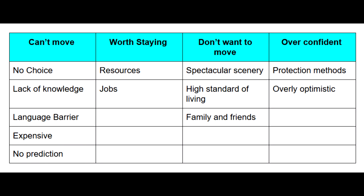Lastly, people can get overconfident with defense mechanisms. There are defense processes and prediction elements involved, and people get too confident, feeling that if anything happens they can deal with it — they've got all the resources needed to handle the situation. Also, they can be very optimistic, thinking the chances of an event happening are quite minor. It's quite a low percentage that these events could occur, so people are willing to take that risk.